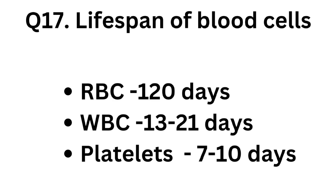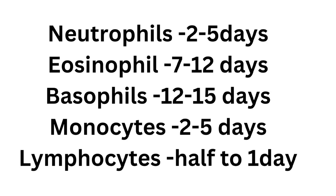You can make codes to study it well; otherwise it is tough. Question number seventeen: lifespan of blood cells. RBC — 120 days. WBC — 13 to 21 days. Platelets — 7 to 10 days. Neutrophils — 2 to 5 days. Eosinophils — 7 to 12 days. Basophils — 12 to 15 days. Monocytes — 2 to 5 days. Lymphocytes — half to 1 day.